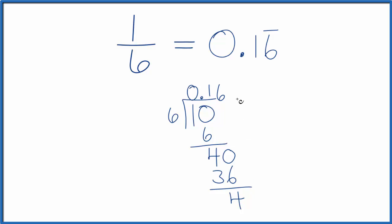We get 4, so we move over, and this is 40. 6 goes into 40—6 times 6 is 36. And you can see that 6 is just going to keep repeating. So the fraction 1 over 6 in decimal form is 0.16 with the 6 repeating.